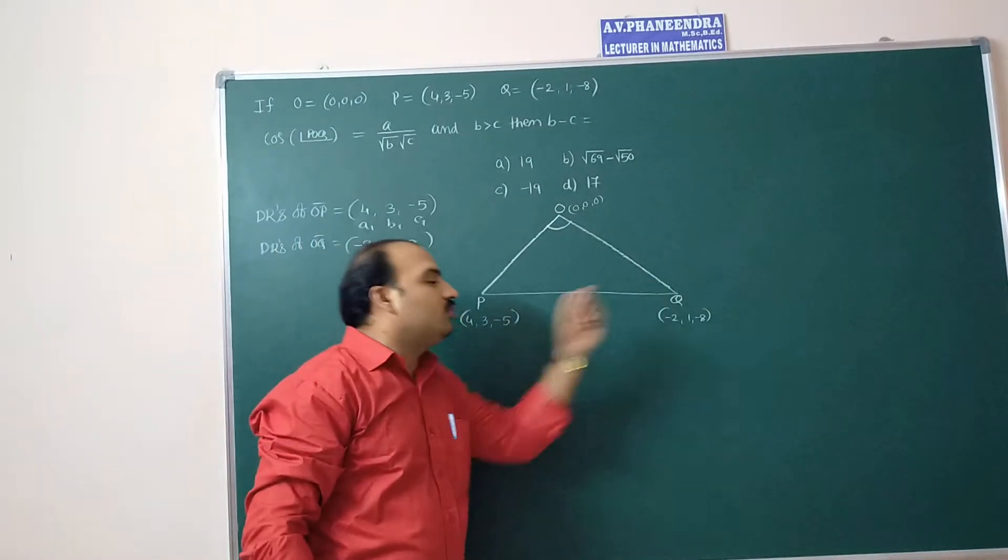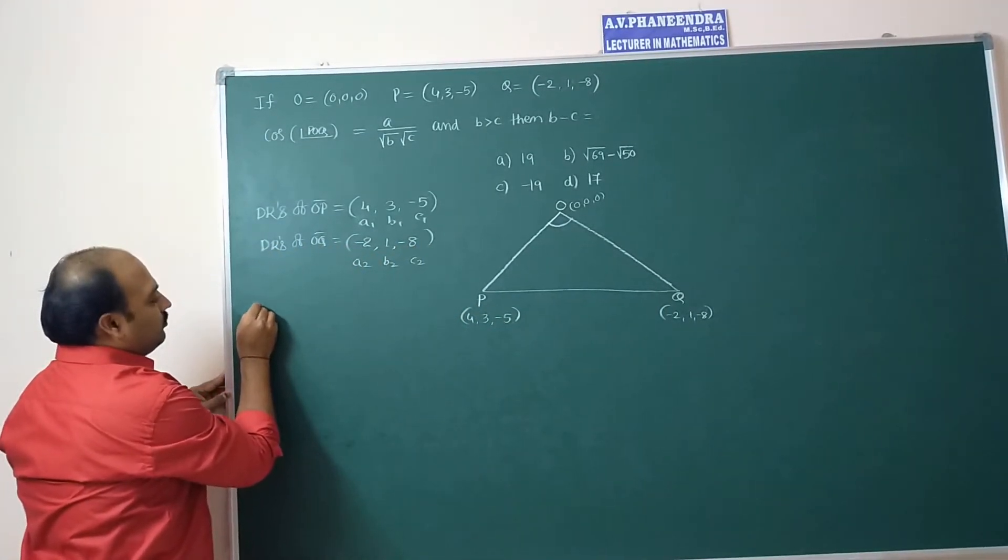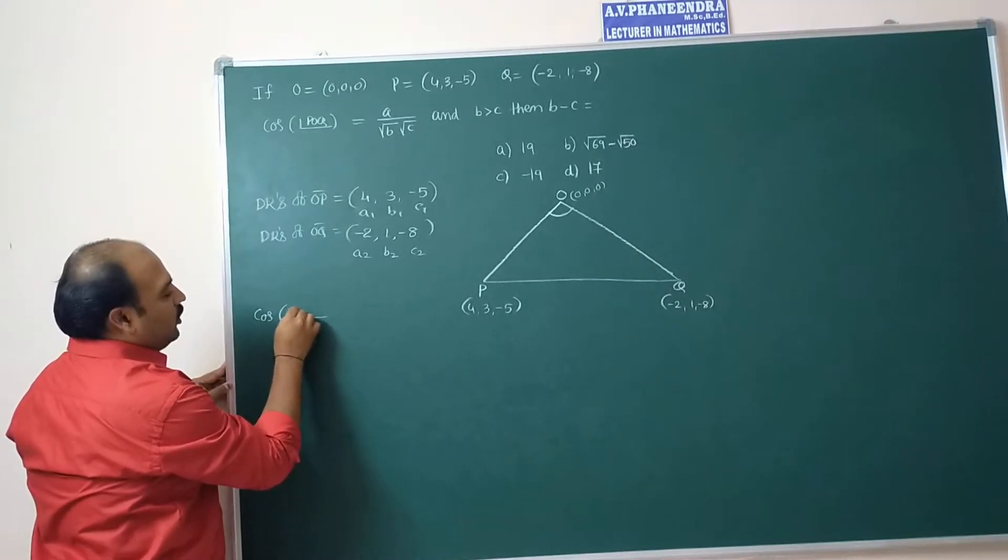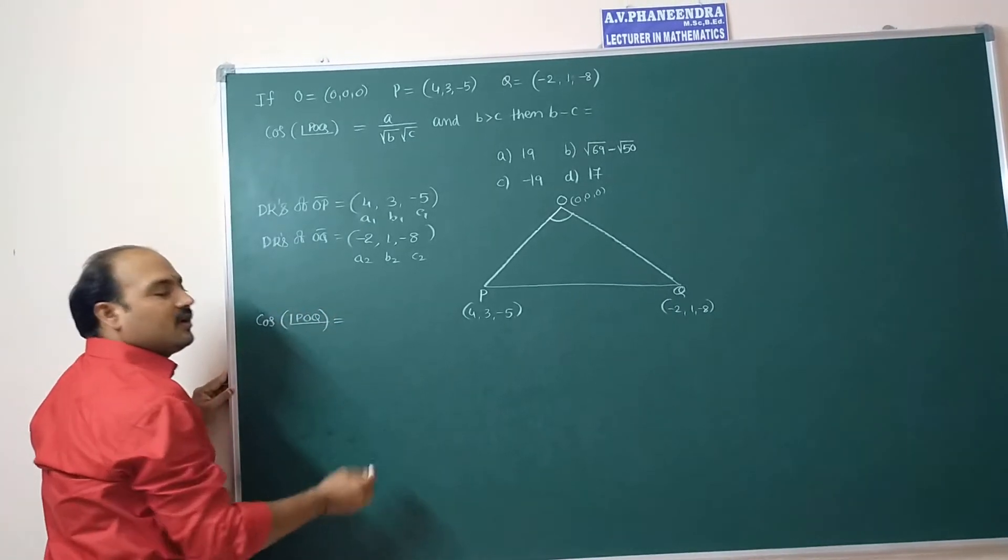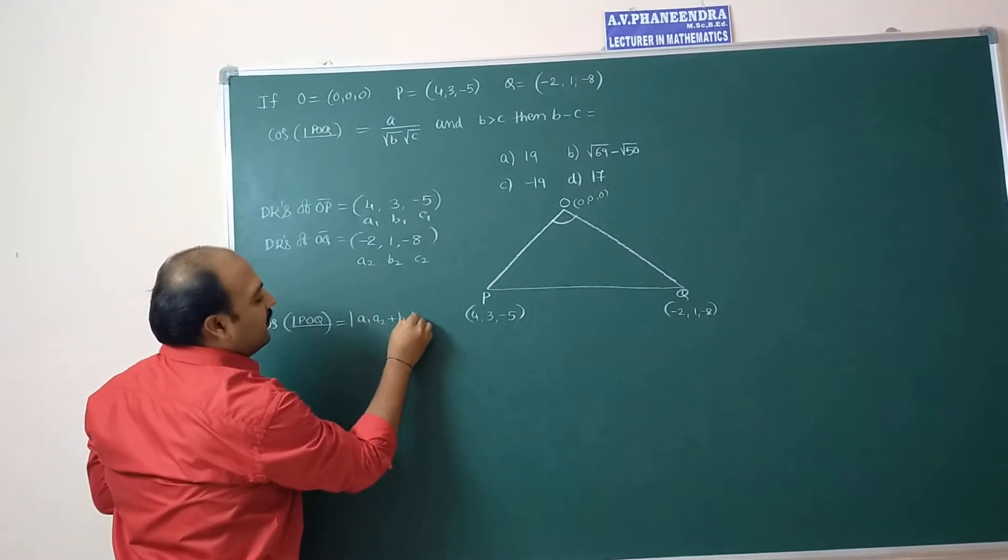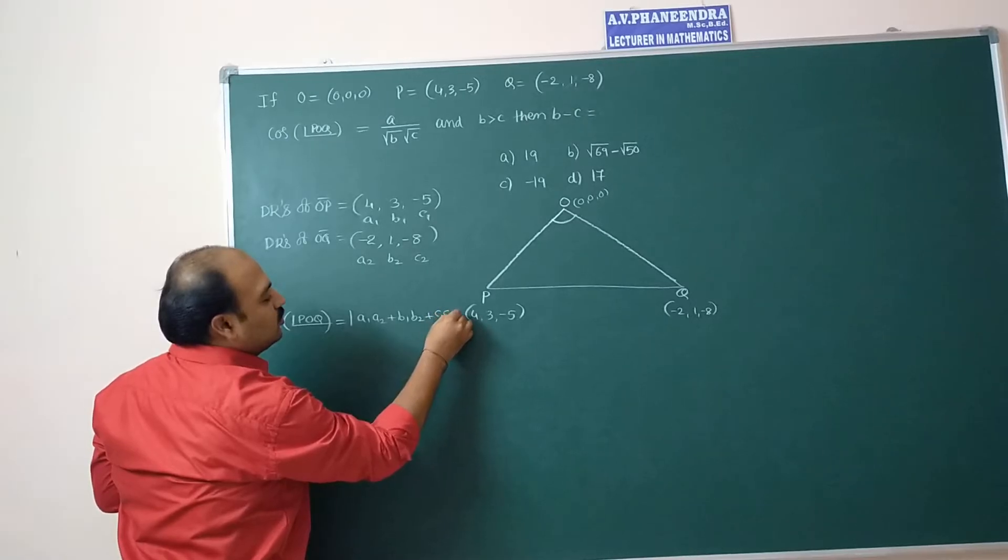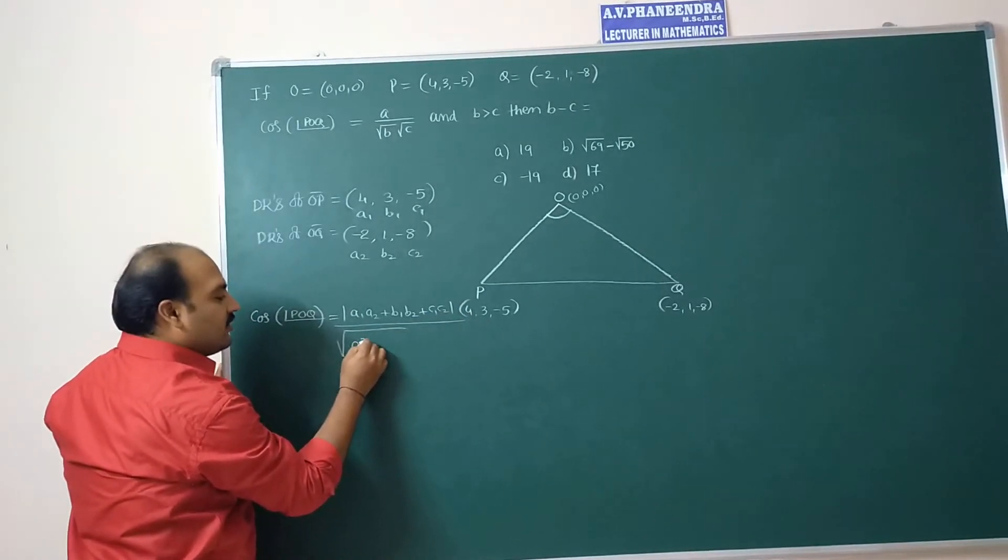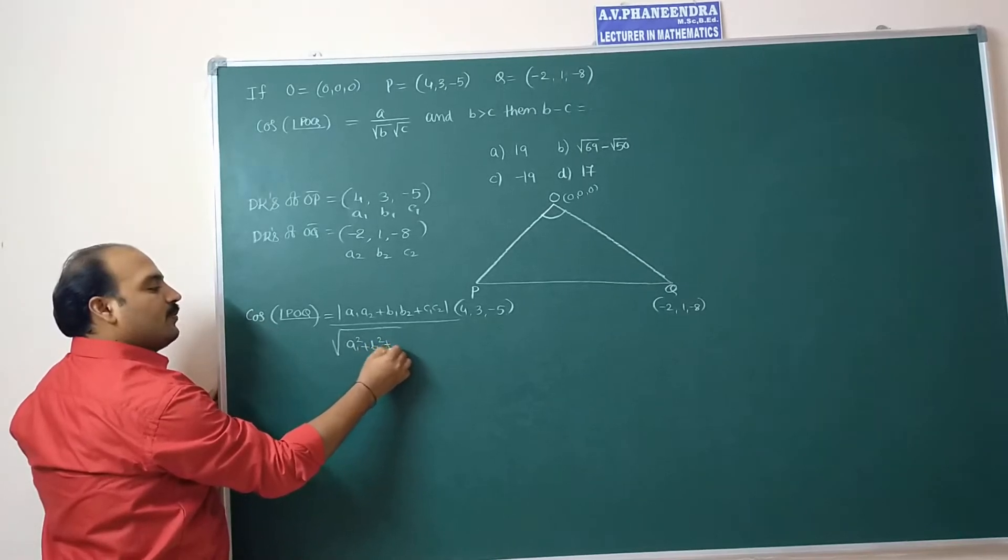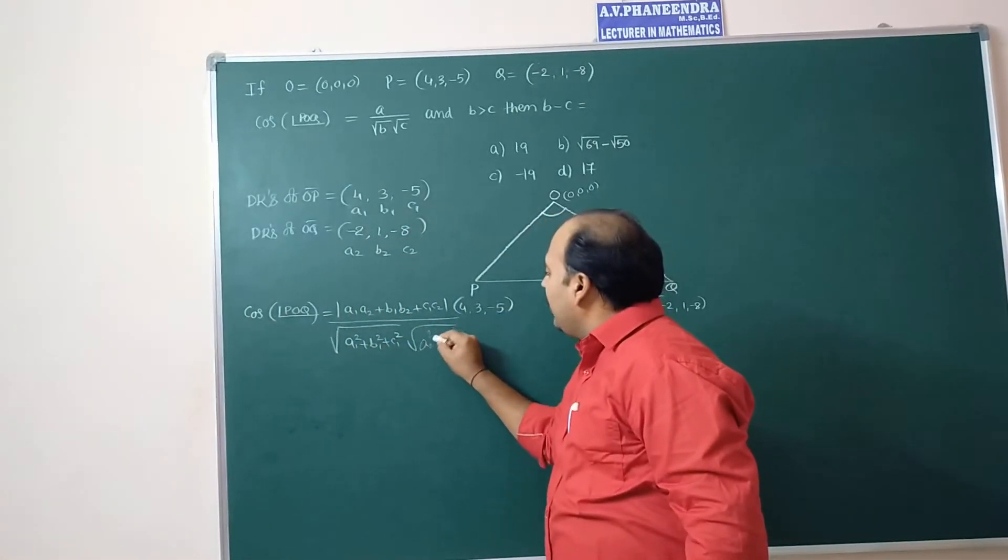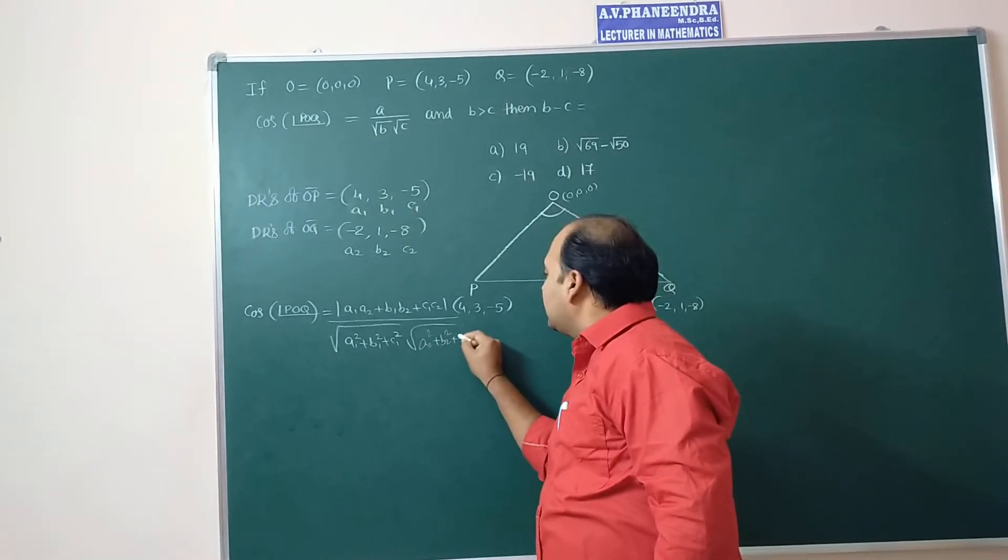The angle between these two is POQ. So angle between them, angle POQ equals, apply that formula: mod A1A2 plus B1B2 plus C1C2 by square root of A1 square plus B1 square plus C1 square into square root of A2 square plus B2 square plus C2 square.